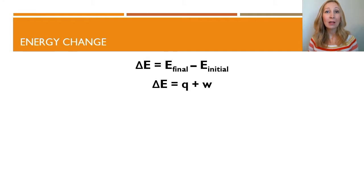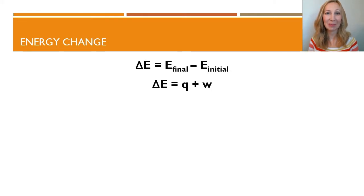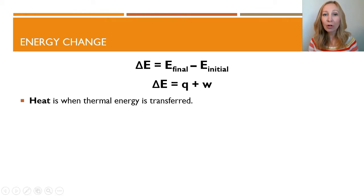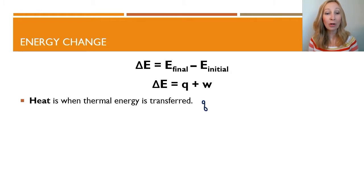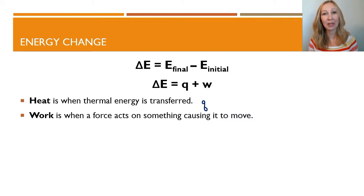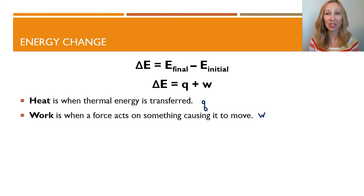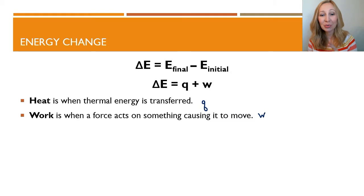Here's an equation we use to calculate the change in energy of a system: delta E is equal to Q plus W. Heat is represented by the letter Q — it's the transfer of thermal energy. W is the symbol for work, and work is when a force acts on something causing it to move. Those are the two ways we combine to calculate the change in energy. Remember, the definition of energy is the ability to transfer heat or do work.